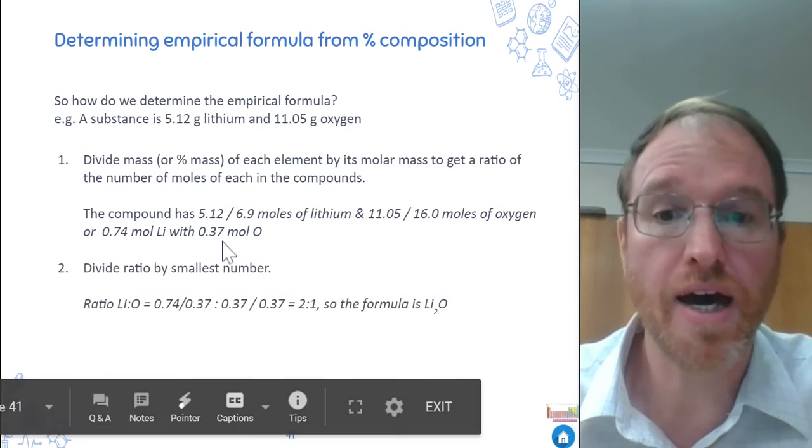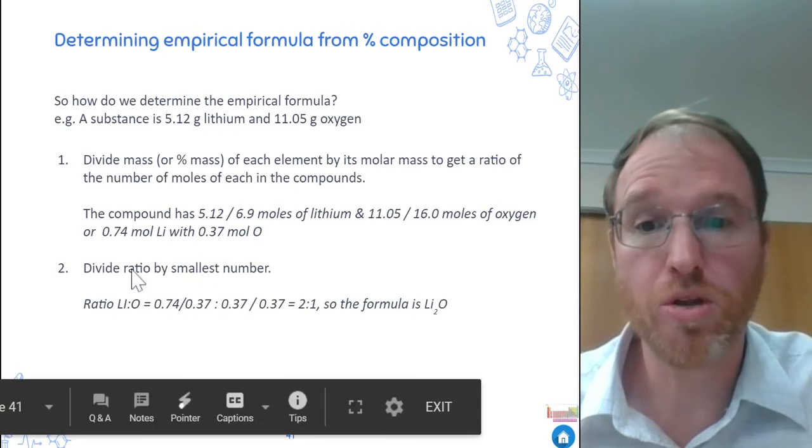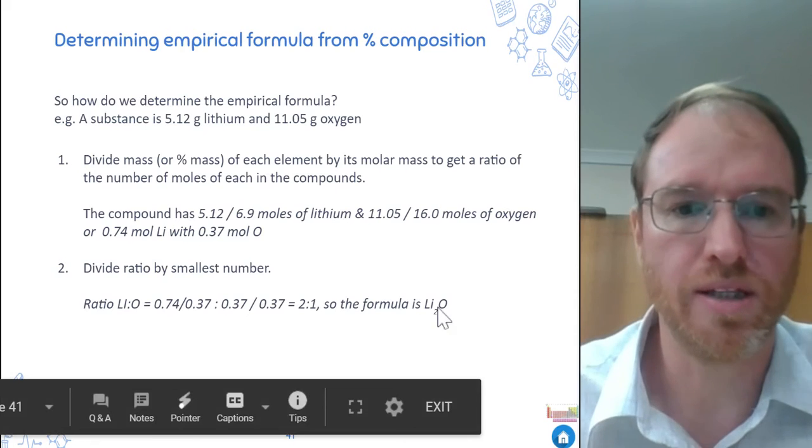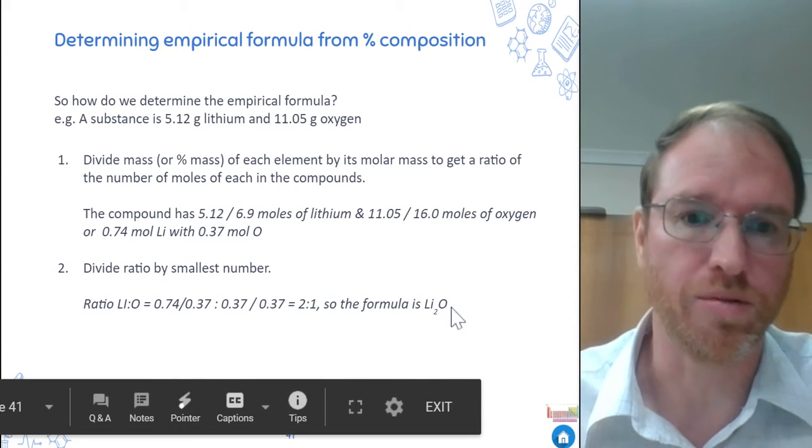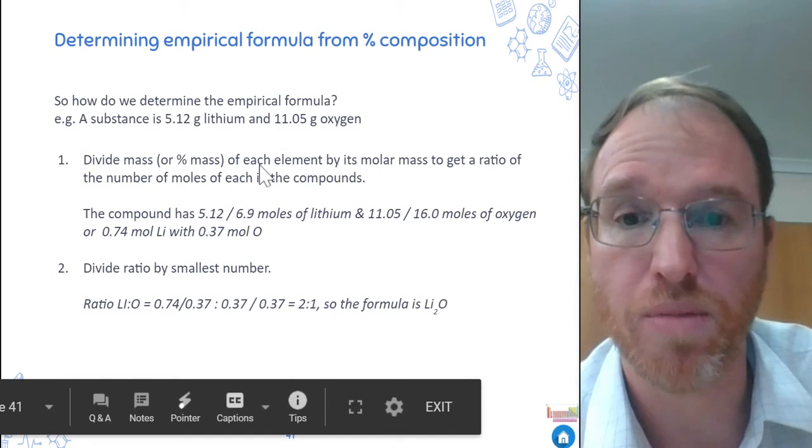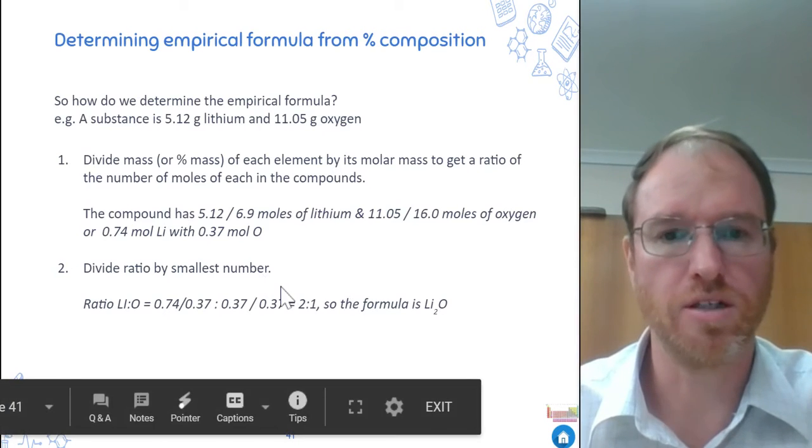So the second thing we do is we divide by the smallest number, in this case, 0.37. We divide both by 0.37 and we get 2 to 1. And so we can see quickly that the formula is Li2O. There's two lithium for every one oxygen. So we just divide by the molar mass. And then we divide them by the smallest number to get a nice ratio.